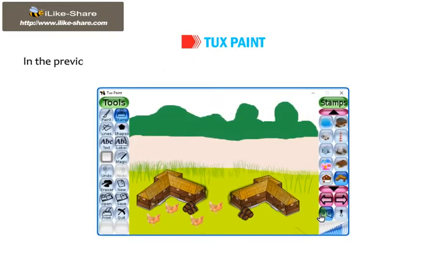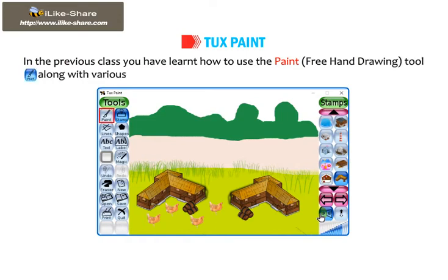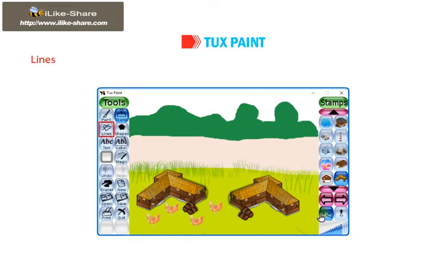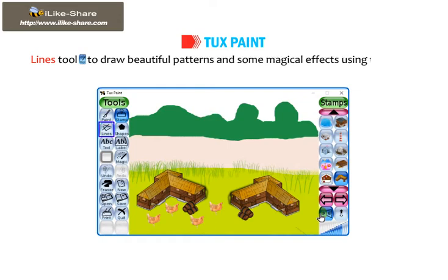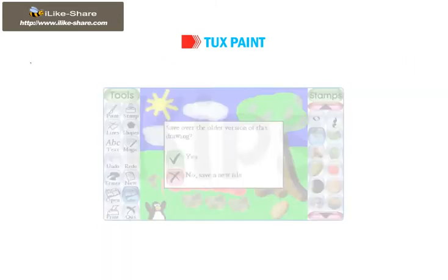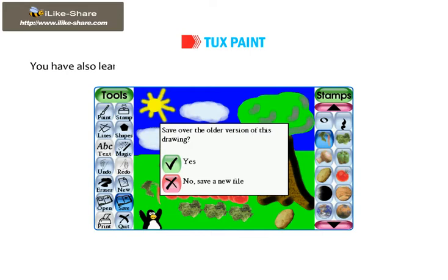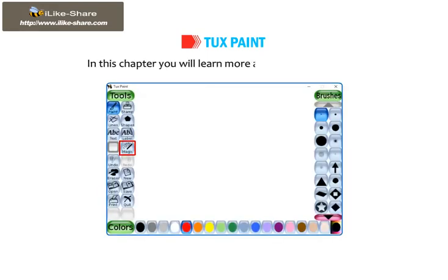In the previous class, you have learned how to use the Paint freehand drawing tool along with various brush shapes, lines tool to draw beautiful patterns and some magical effects using the magic tool. You have also learned how to save your work as well as open an already saved file. In this chapter, you will learn more about the magic tools.